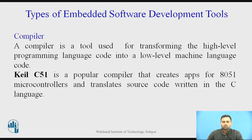The next tool is Compiler. A compiler is a tool used for transforming high-level programming language code into low-level machine language code. When a user writes a program in high-level language, the compiler converts it into low-level machine language that the machine can read. Keil C51 is a popular compiler that creates applications for 8051 microcontrollers and translates source code written in C language into machine language.